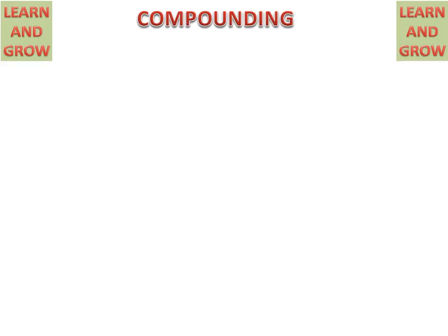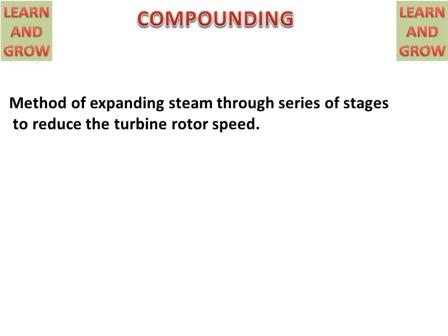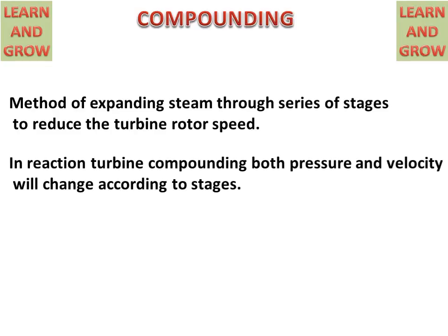Today we will discuss compounding of reaction turbine — how it works for velocity and pressure distribution. Compounding is the method of expanding steam through a series of stages to reduce the turbine rotor speed. In a reaction turbine, compounding uses both pressure and velocity changes according to their stages.